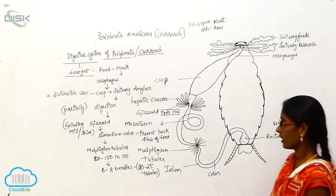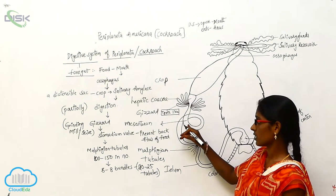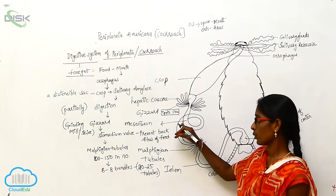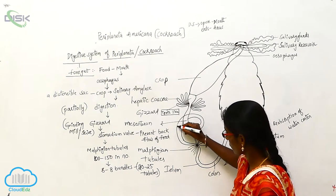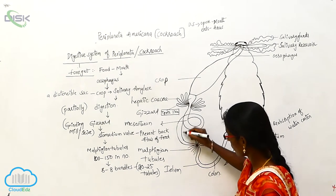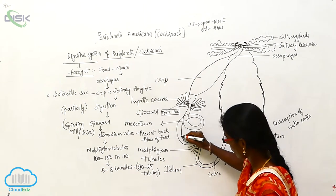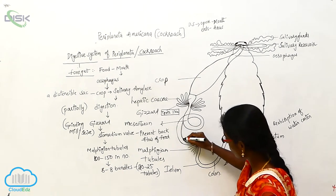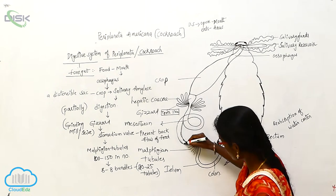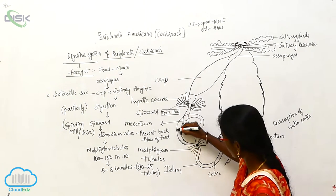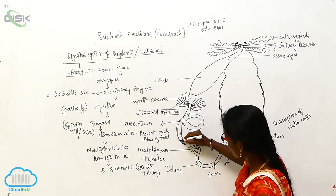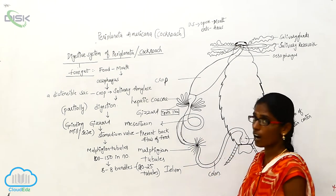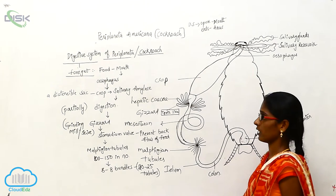The mesenteryon has some cuticle layer. This cuticle layer is used for the protection against hard particles in the food material.